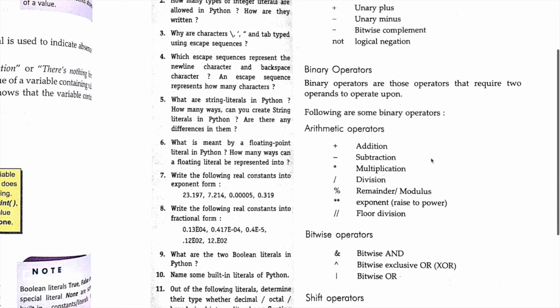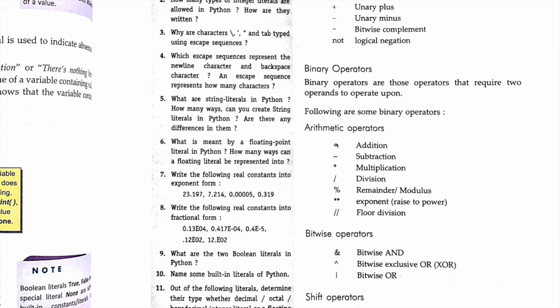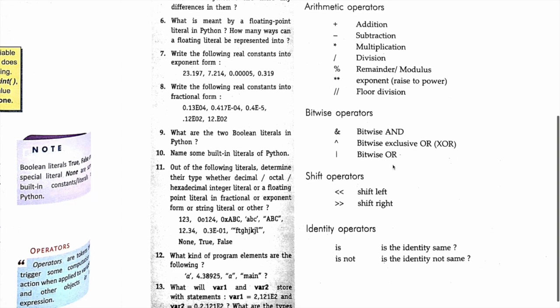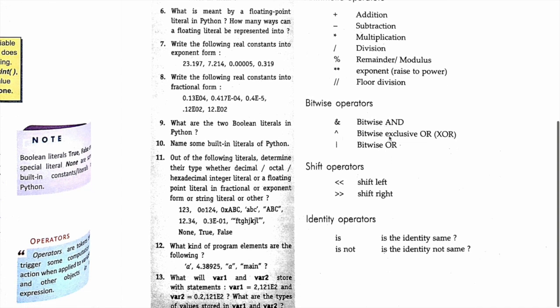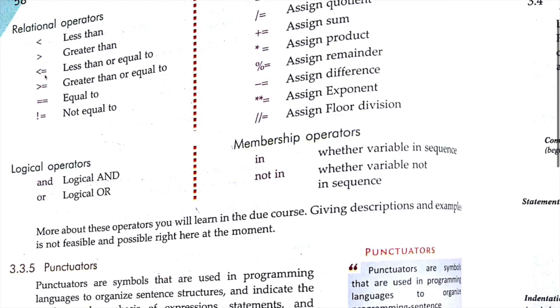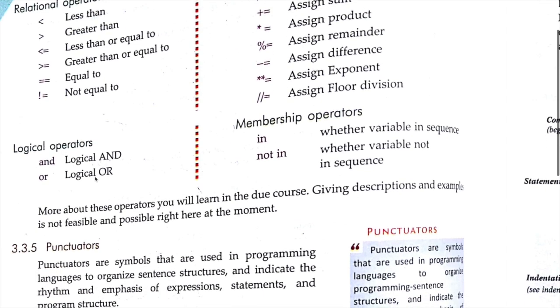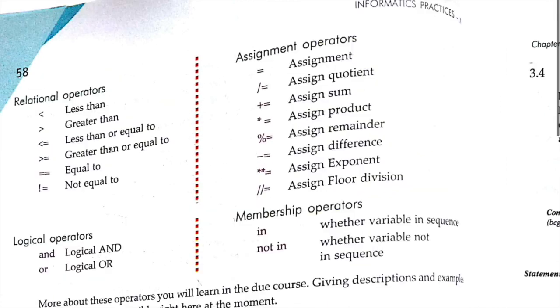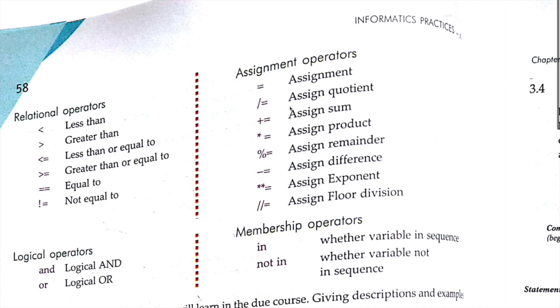Binary operators require two operands to operate upon. Examples are arithmetic operators: addition, subtraction, multiplication — these all require two operands. For example, to add something there should be one value plus another. Next, bitwise operators: AND, XOR (exclusive OR), then shift operators (left shift and right shift), then identity operators, and relational operators: less than, greater than, less than or equal to, greater than or equal to, equal to, not equal to.